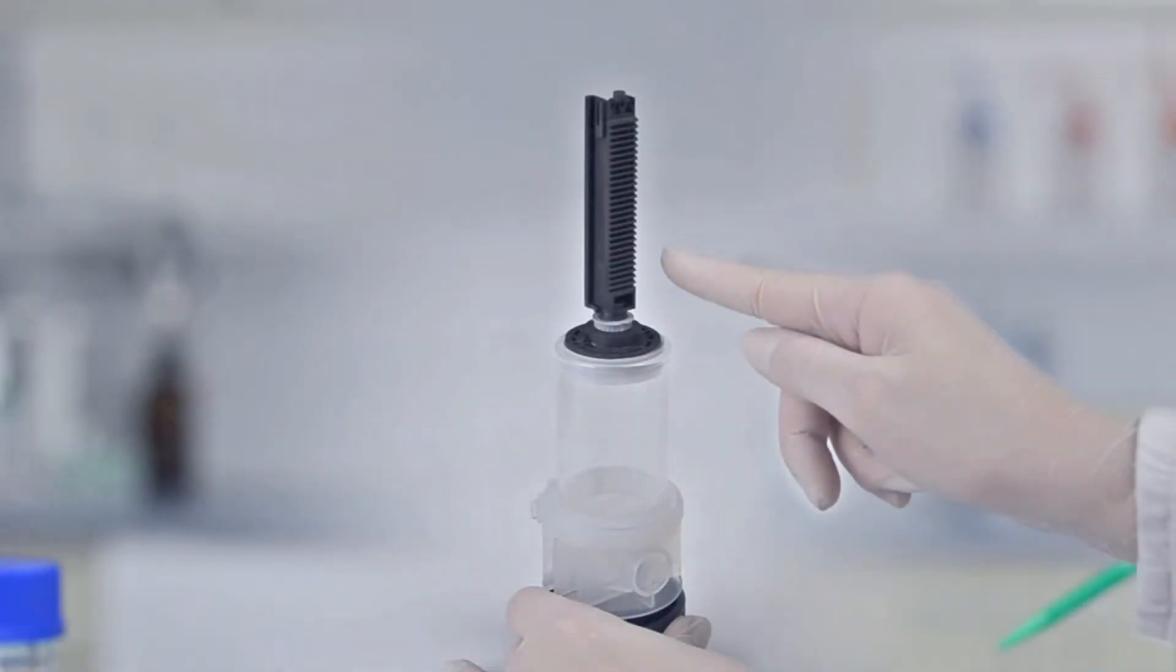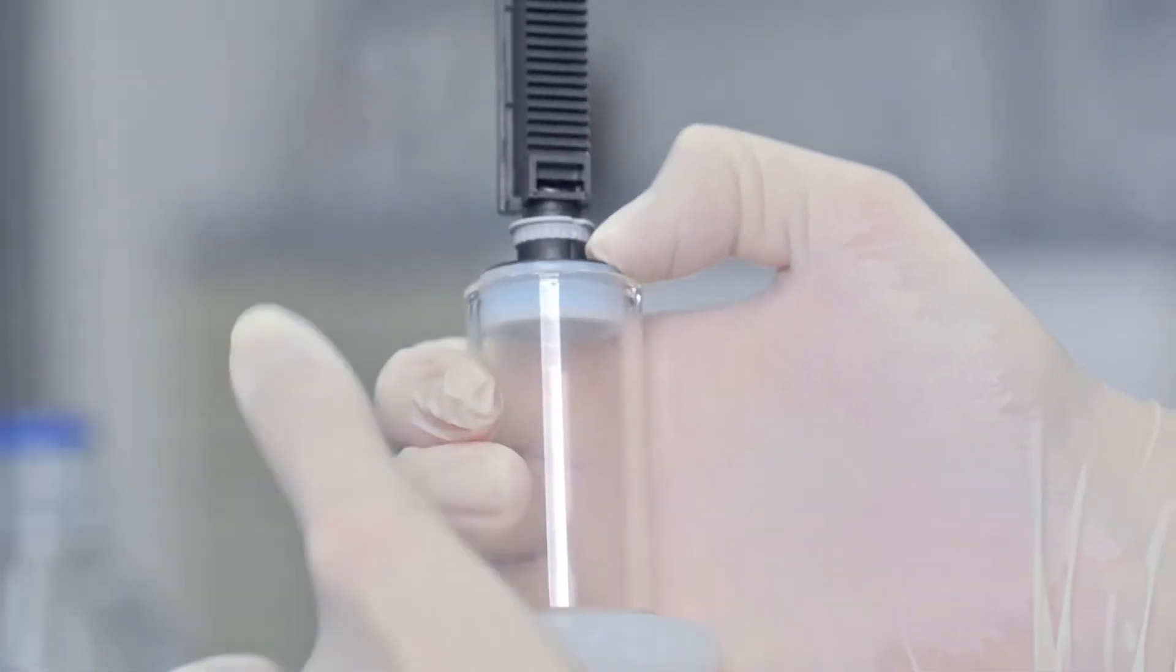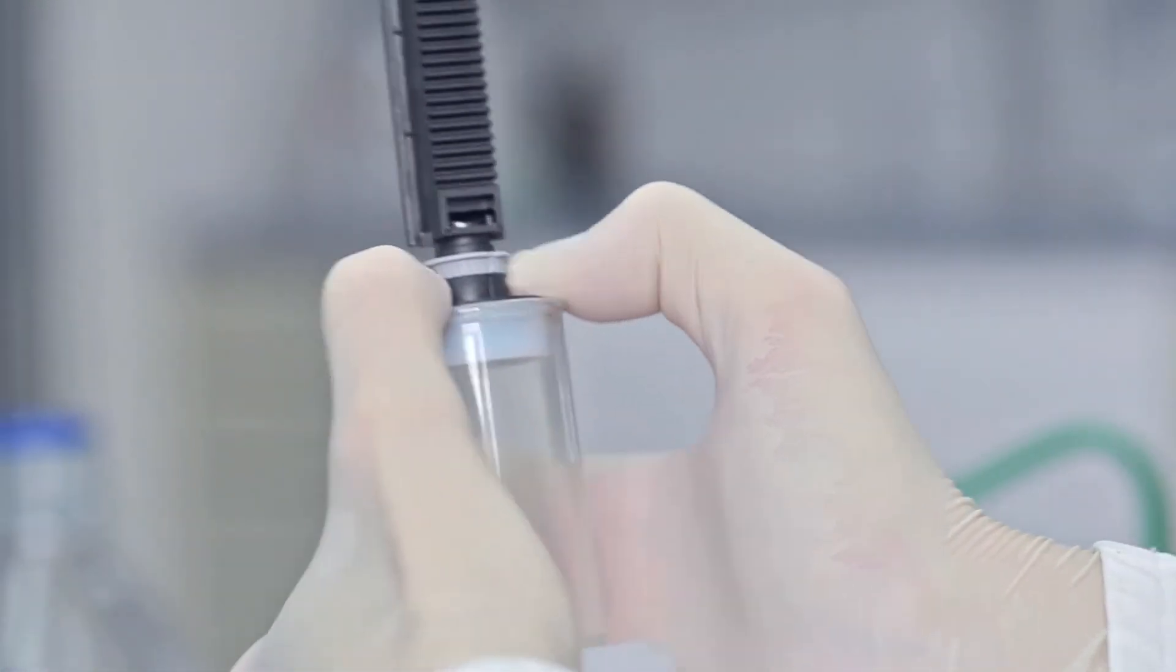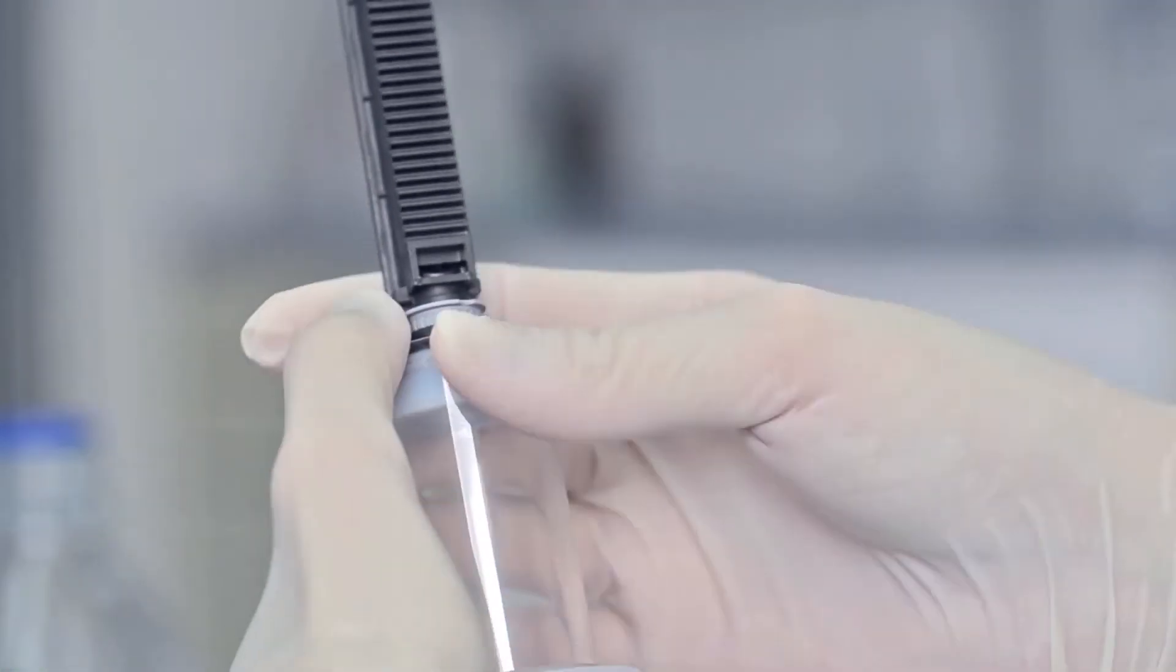Now line up the piston rod. The tooth rack of the piston rod must be arranged in the direction of the air vent opening of the valve block. Now insert the piston vertically into the cylinder and press it halfway in.